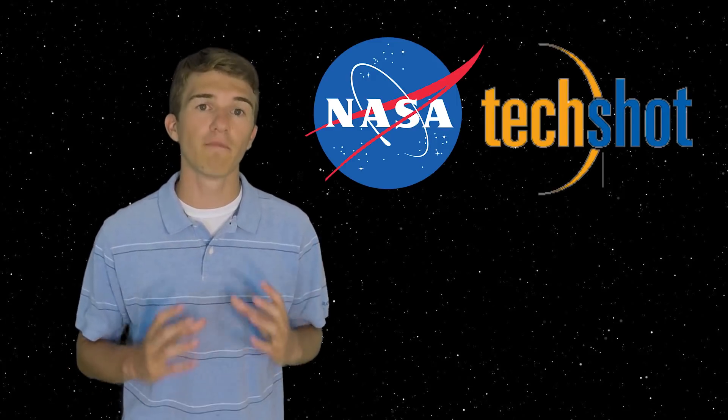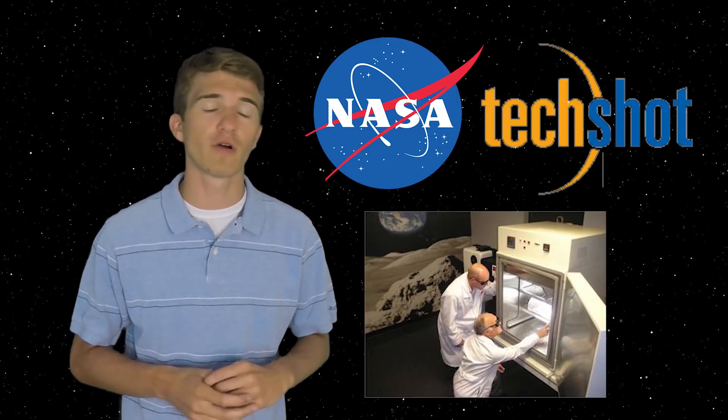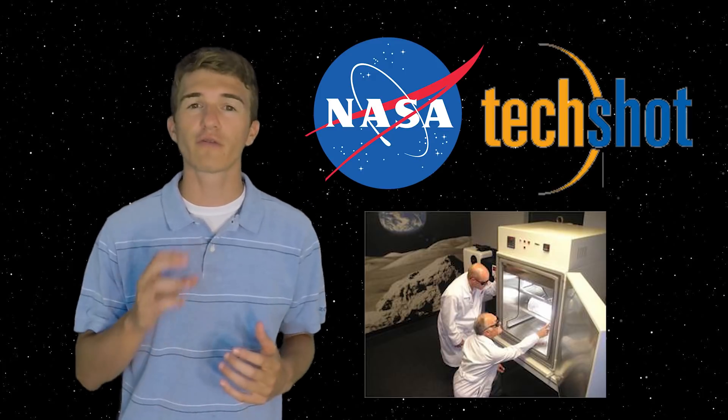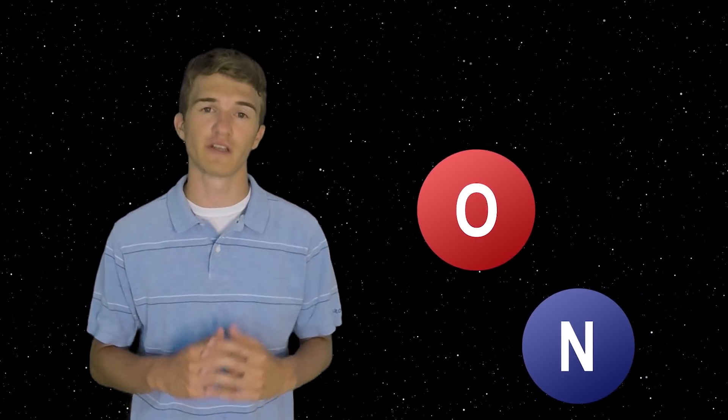Now for ecopiesis, or the process of creating an ecosystem on Mars, NASA is working with a company called Techshot, and they are developing biodomes that could be drilled into the Martian regolith. This will not only create oxygen using cyanobacteria, but will also try and introduce some nitrogen to the soil, which could be used for fertilizer for future missions and creating plant life.